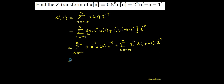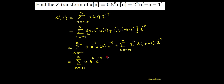Now I can simplify this further. With respect to the first term, I have u(n), which is the step signal existing from zero to infinity. So ultimately the limits are going to be zero to infinity of 0.5 to the power n times z to the power minus n, and u(n) in that region is nothing but one, with amplitude of one.